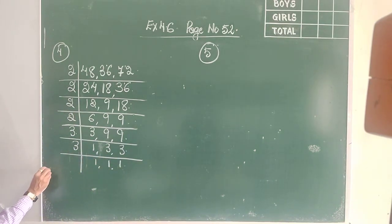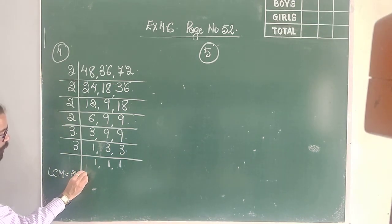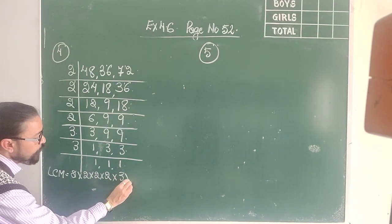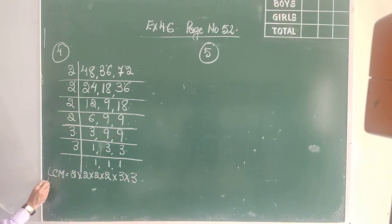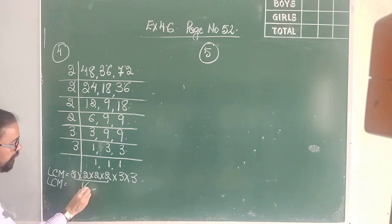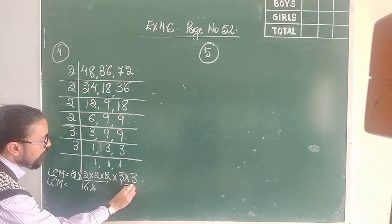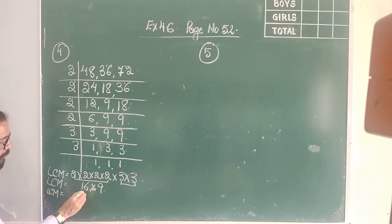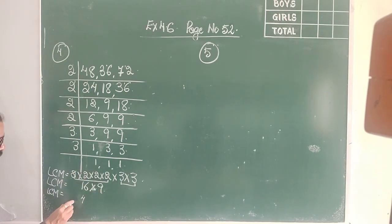So my LCM is 2 multiplied 4 times, and 3 multiplied 2 times. So the LCM would be: 2 × 2 × 2 × 2 = 16, and 3 × 3 = 9. So my LCM would be 9 × 16 = 144.